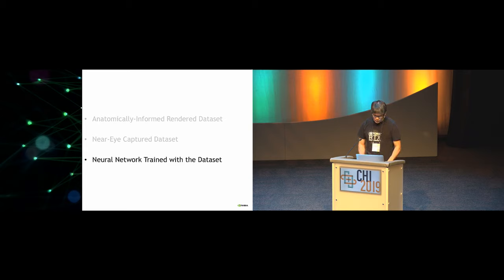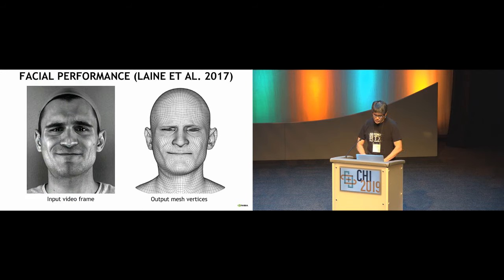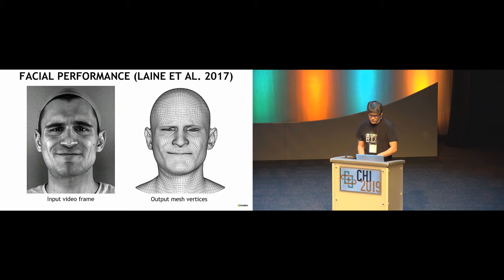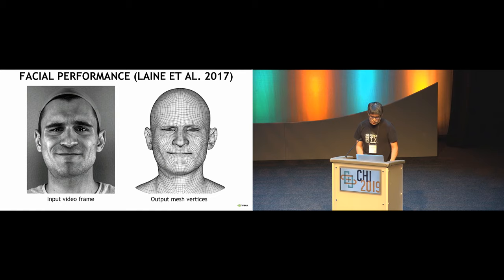Now let me talk about the neural network we trained using this data. I'll talk about pupil localization in this talk, but you can find other examples in our paper. Our network architecture was inspired by work done by Laine and colleagues on facial expression detection. The input to the network was a picture of a person's face, and the output was the locations of 5,000 vertices in the face mesh. We thought this was a good candidate for gaze estimation because the network was good at accurately and robustly detecting local position change and orientation change of each part of the face.